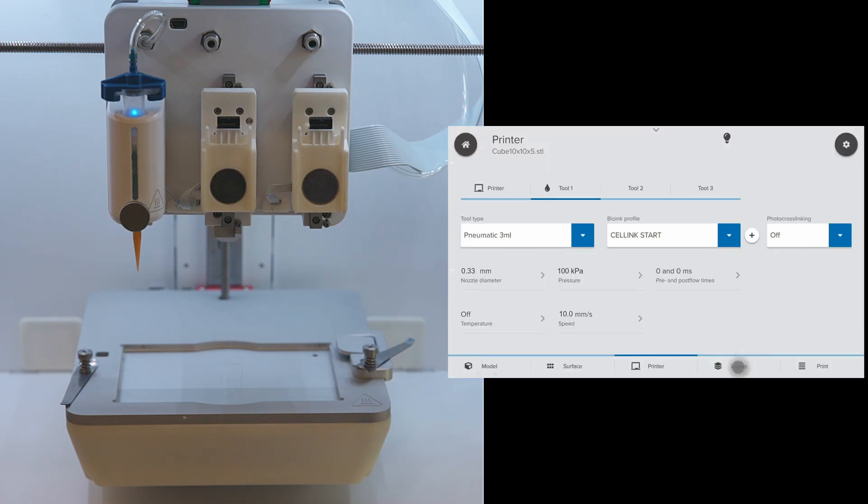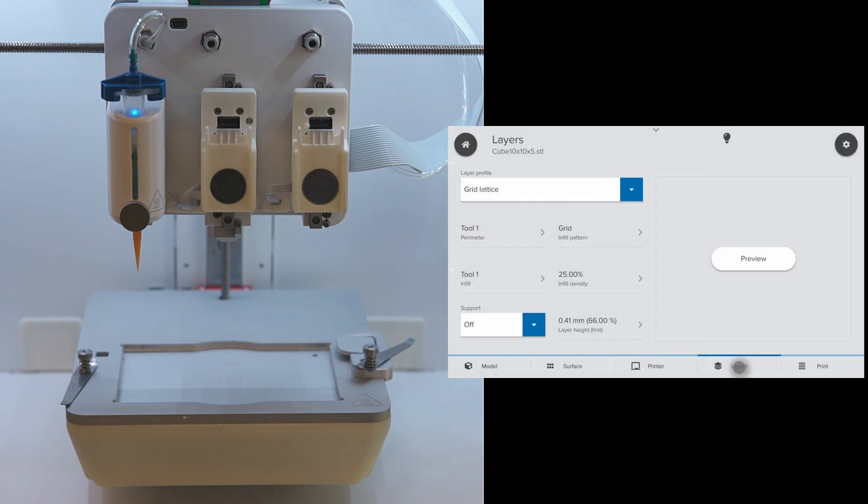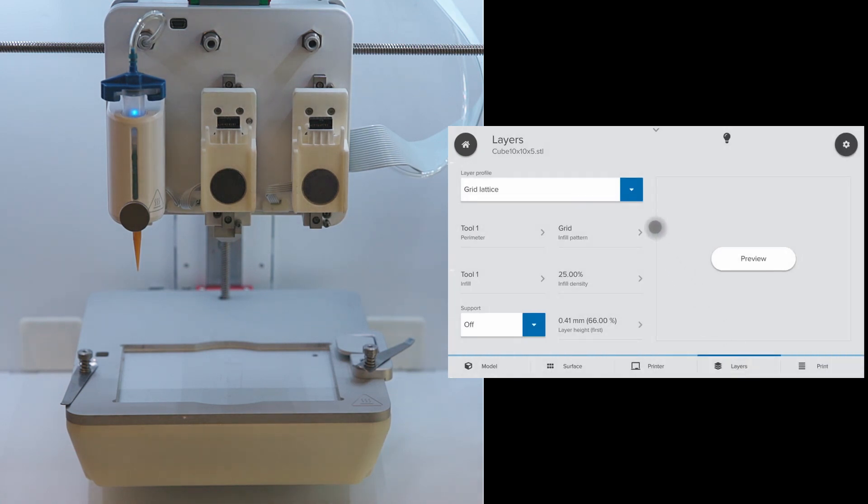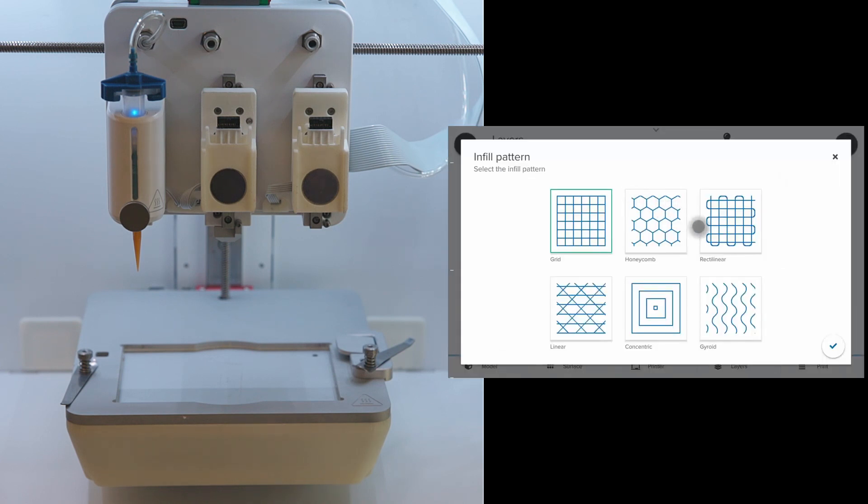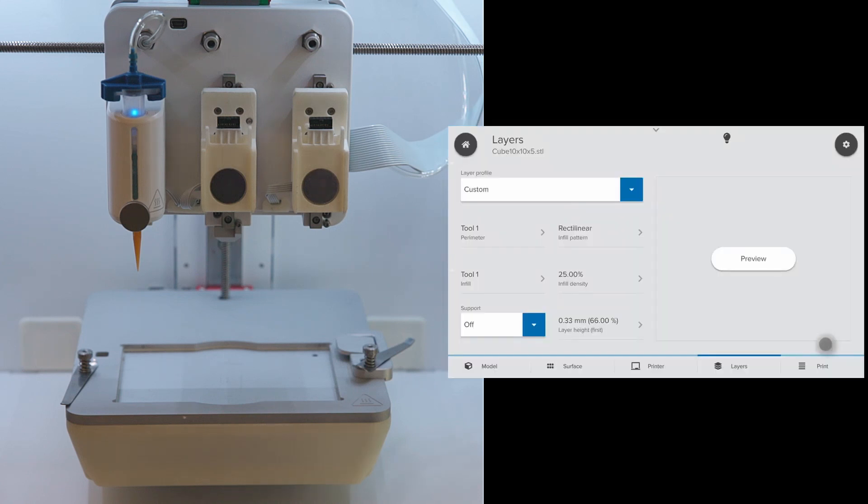After optimizing the printing parameters, we go to the next tab, Layers. Here, we can choose from different infill patterns. Here, I'll be choosing the grid lattice. We have options for perimeter and tool for infill. I'll be choosing rectilinear path and click OK. The infill density can be modified as needed. Next, click on preview to look at the layers.